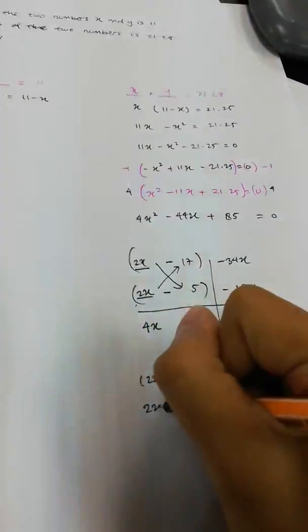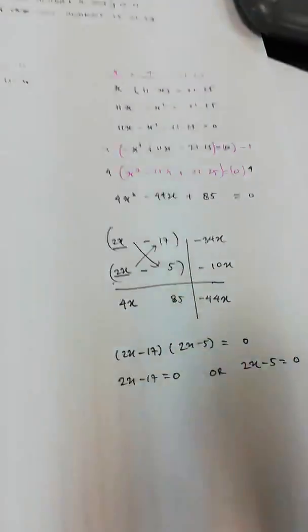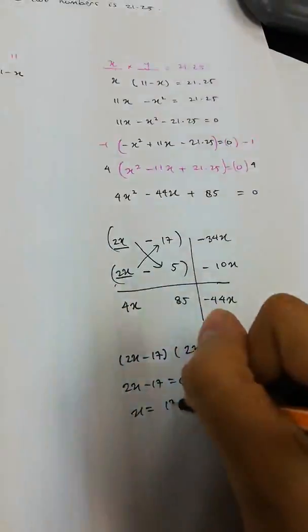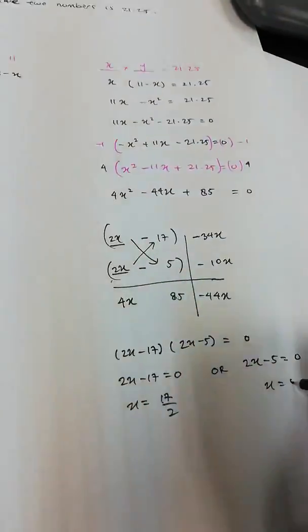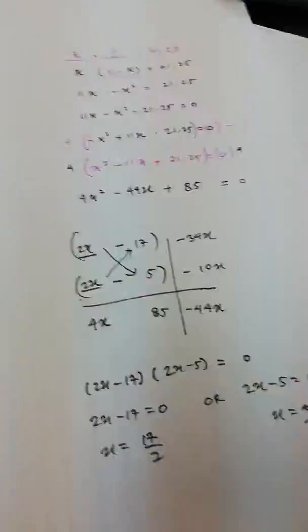Therefore, 2x minus 17 equals to 0 or 2x minus 5 equals to 0. So, x equals to 17 over 2. There you go. Alright, so this is the x.